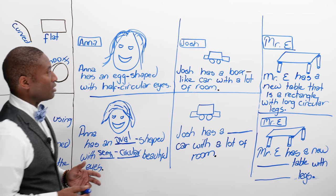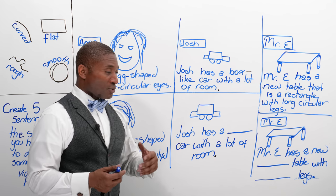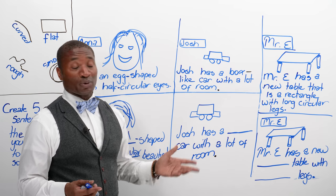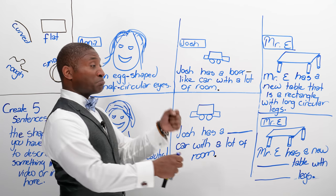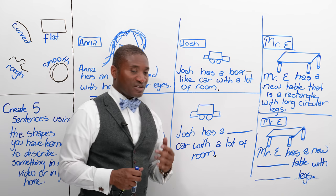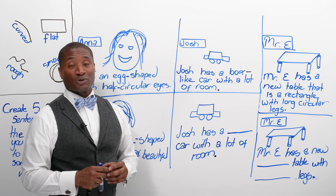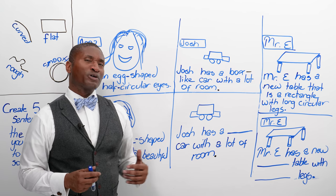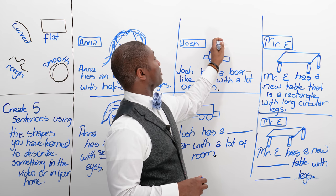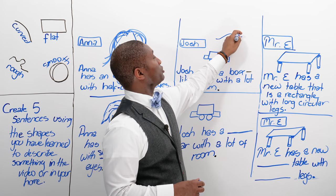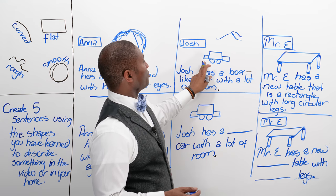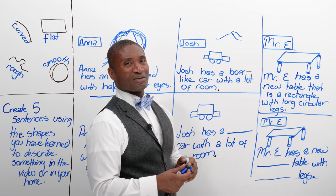Now let's talk about objects — how can we use these words for objects? How about something you probably drive on a regular basis: a car. In North America we're known for having bigger cars, as opposed to Europe which has smaller cars. Some older cars didn't have the same shape as now — newer cars have a nice smooth shape, but in the old days they used to be kind of like a box, very, very square.